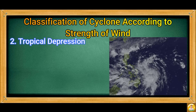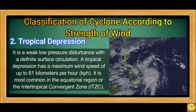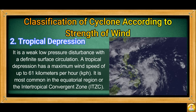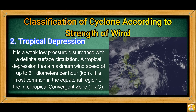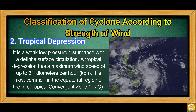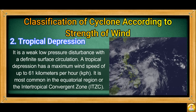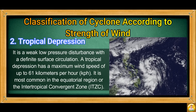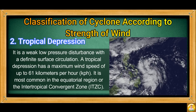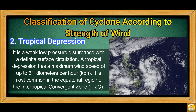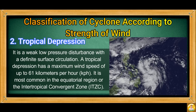Tropical Depression is a weak low pressure disturbance with a definite surface circulation. A tropical depression has a maximum wind speed of up to 61 km per hour. It is most common in the equatorial region, or the Intertropical Convergence Zone.